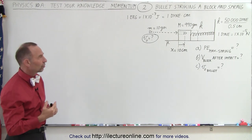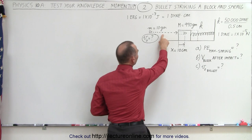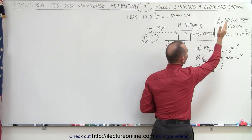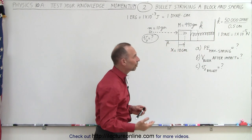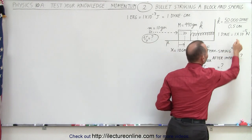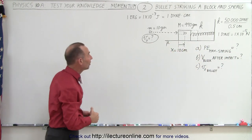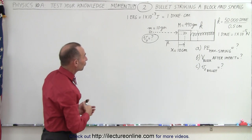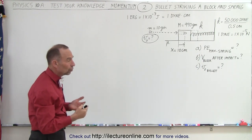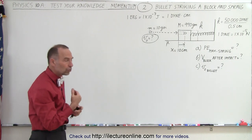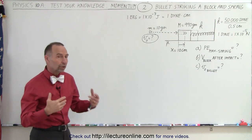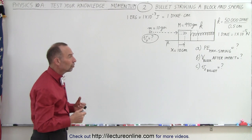Notice we have some interesting units on the board. We have the mass of the bullet in grams, the mass of the block in grams, the compression in centimeters, and the spring constant in dynes per centimeter — 50,000 dynes per 0.5 centimeters, which is 100,000 dynes per centimeter. A dyne is 1×10⁻⁵ newtons, so one newton is 100,000 dynes. We also have the unit of erg on the board: one erg is 1×10⁻⁷ joules, and an erg is a dyne times centimeter. These are still metric units, but they're not used much anymore — usually we convert everything into newtons and joules. But let's work the problem using these old units to see how they work.